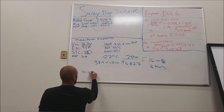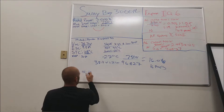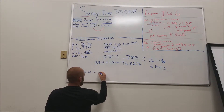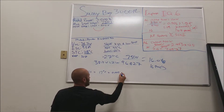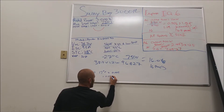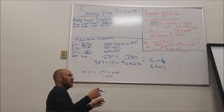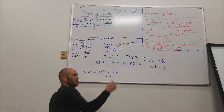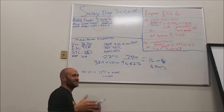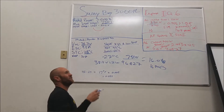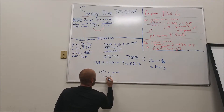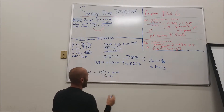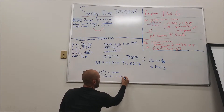42 minus 25 — your high temperature minus your standard testing conditions — equals 17 degrees C. Hit that with your 0.005 factor: 17 times 0.005 equals 0.085. Now, if it's getting colder the voltage goes up, so you add one. But it's hotter, so you don't add — you subtract. One minus 0.085 equals 0.915.